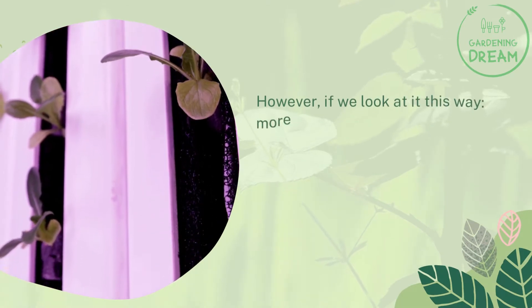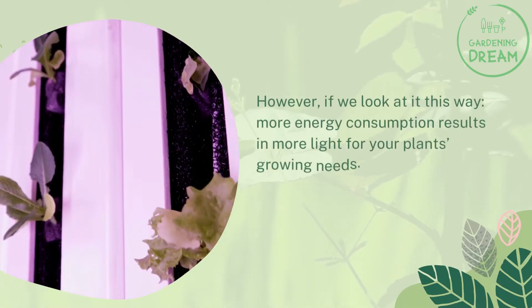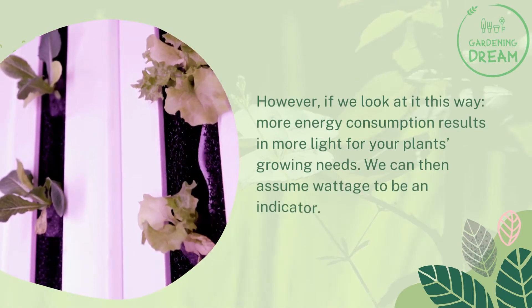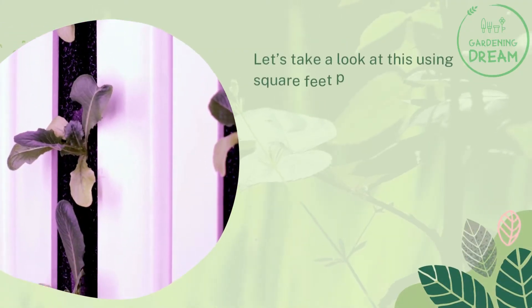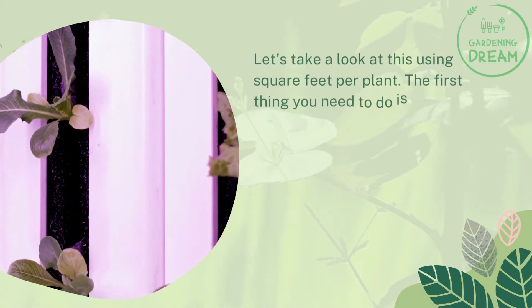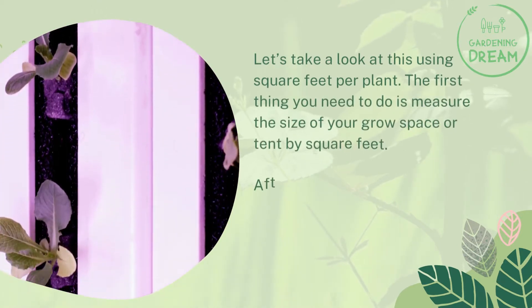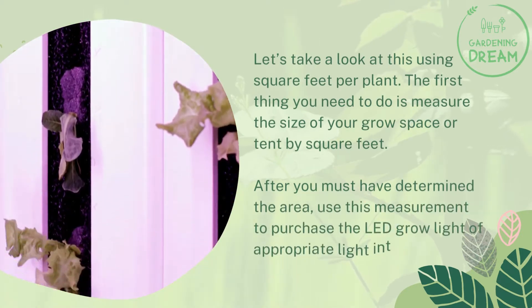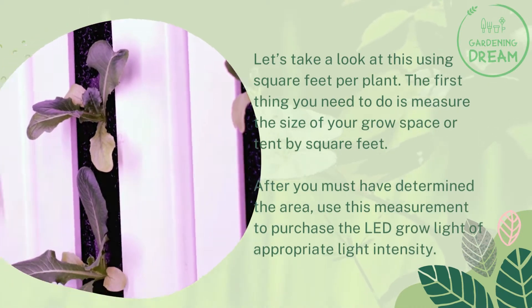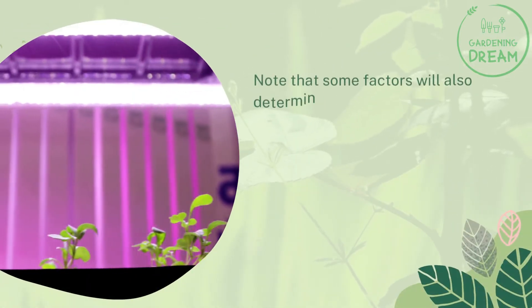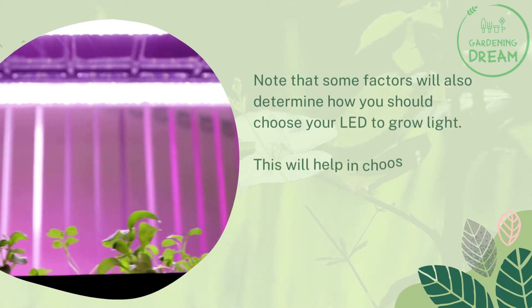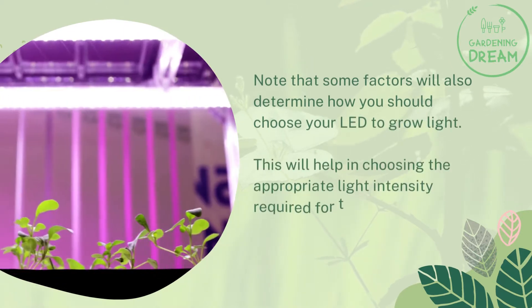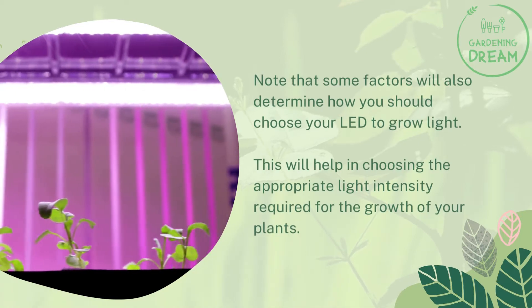However, more energy consumption results in more light for your plants' growing needs, so we can assume wattage to be an indicator. The first thing you need to do is measure the size of your grow space or tent by square feet. After you've determined the area, use this measurement to purchase the LED grow light of appropriate light intensity. Note that some factors will also determine how you should choose your LED grow light.